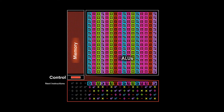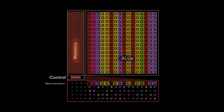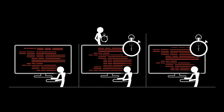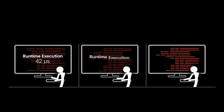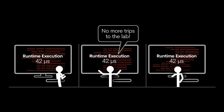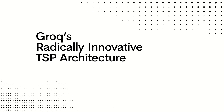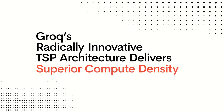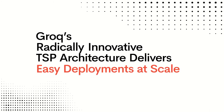Because the data is always streaming, latency is dramatically reduced. With Groq's simplified software-managed approach to compute, developers know exactly the runtime performance before their program is ever run on the chip. Results are perfectly repeatable and deterministic every time.